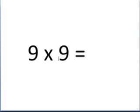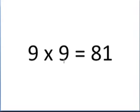9 times 9? One less than 9 is 8, and 8 plus 1 is 9. So 9 times 9 is 81.